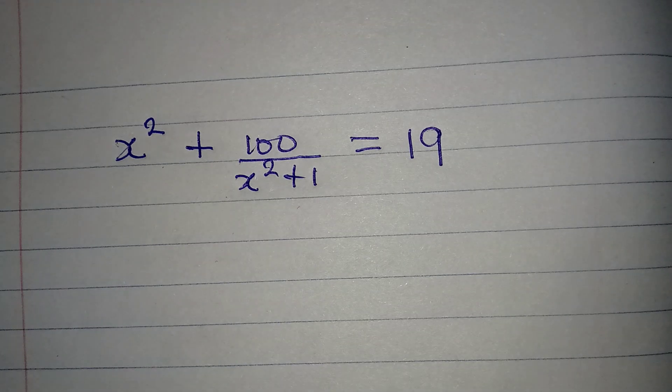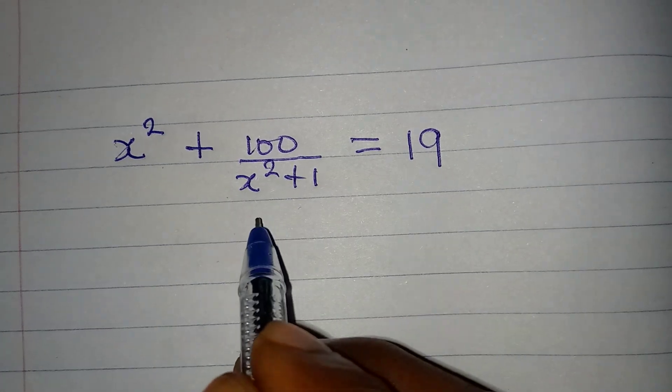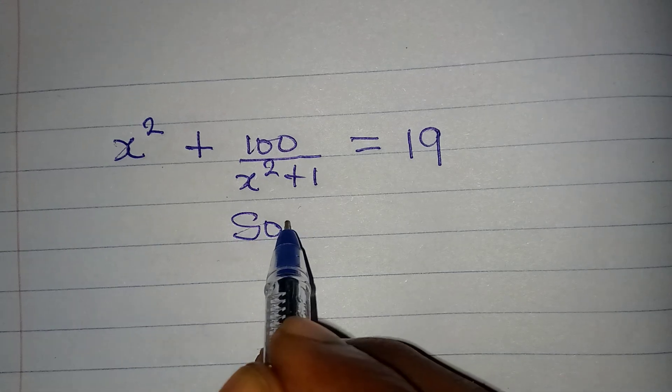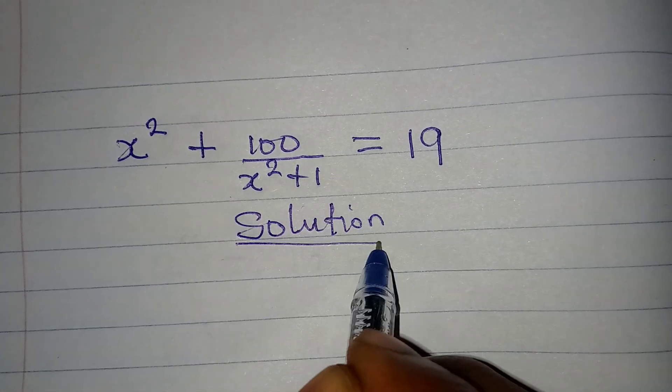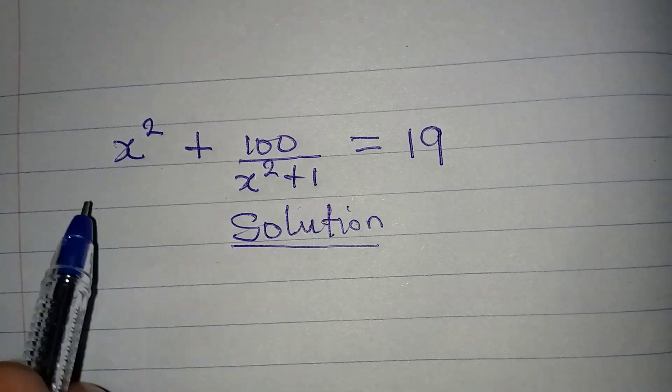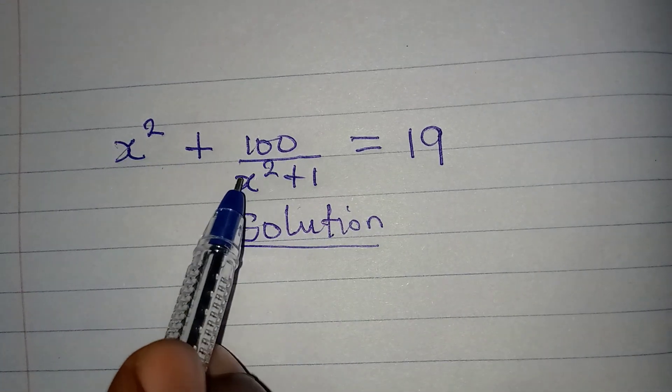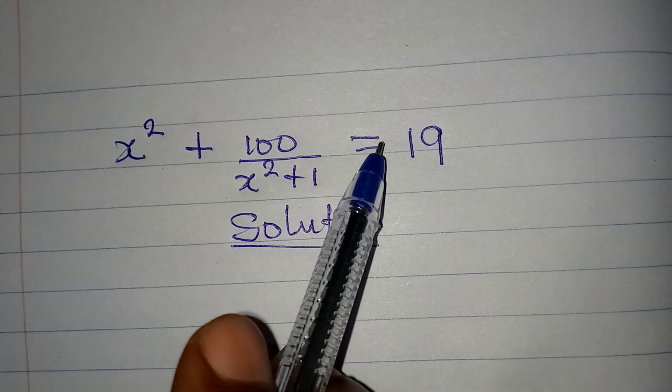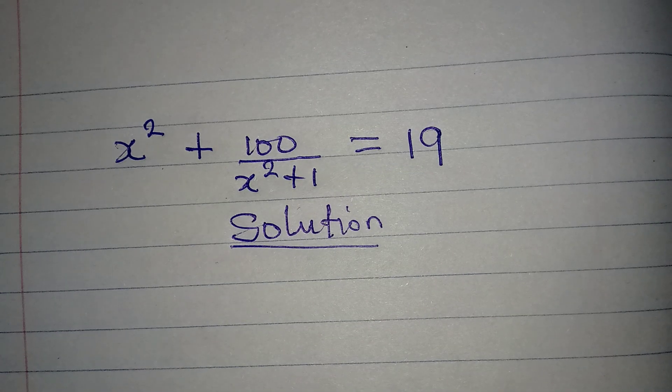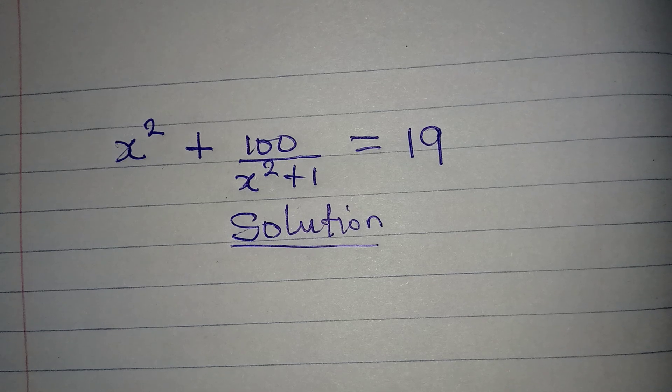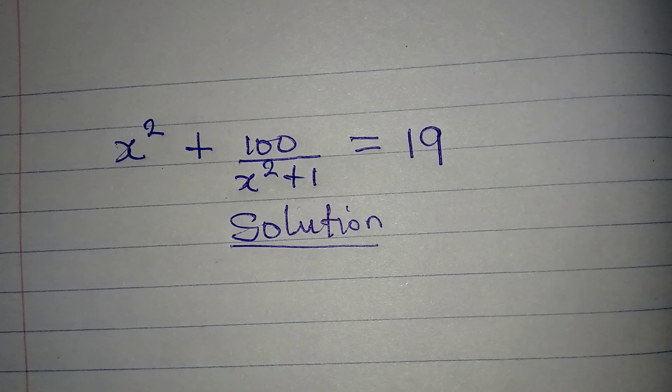Hello everyone, let's solve this problem very quickly. Solution. So this is what we have: x squared plus 100 over x squared plus 1 equals 19. Now I want us to introduce another number that will make it simpler for us to factorize.